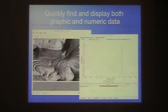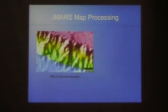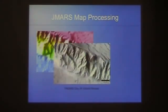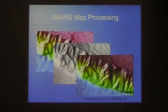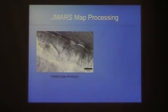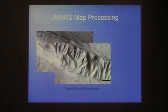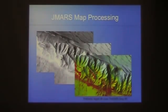We allow you to do some map processing. Starting with an example of MOLA colorized elevation, we can bring in the Themis Day IR global mosaic. With a quick map processing step in the map layer of JMRS, you can create a colorized MOLA over Themis Day IR, which is a higher resolution color image than what we started with. Similarly, with Themis Night IR and Themis Day IR, we can combine those together in JMRS to create an image that makes certain things jump out. I'm not a scientist, so I won't tell you what those things are — but scientists tell me it's useful.